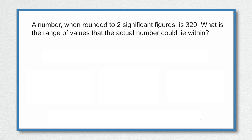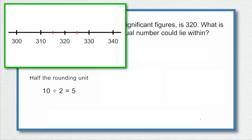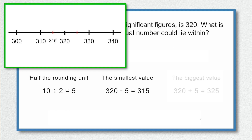A number when rounded to two significant figures is 320. The number line goes up in tens, so we divide 10 by 2 = 5. The smallest value is 320 subtract 5 = 315, and the biggest value is 320 add 5 = 325.